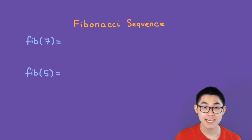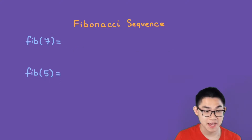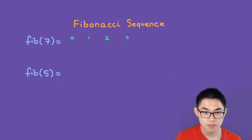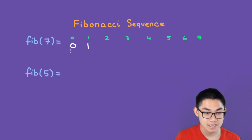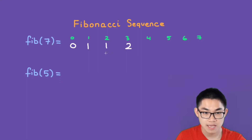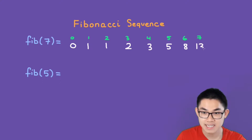What if your teacher wants you to find the 7th number without providing the numbers in the first place? It's also very easy. All you have to do is write out the labels first: 0, 1, 2, 3, 4, 5, 6, and 7. The next step is to write out 0 and 1 because the Fibonacci sequence starts with 0 and 1. Then 0 plus 1 gives us 1, then 1 plus 1 gives us 2, then 1 plus 2 gives us 3, then 2 plus 3 gives us 5, then 3 plus 5 gives us 8, and then 5 plus 8 gives us 13. So the 7th Fibonacci number is 13.